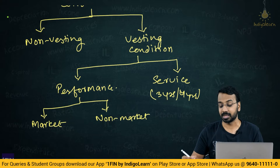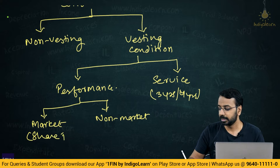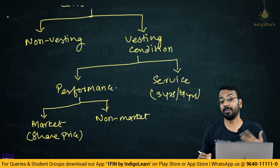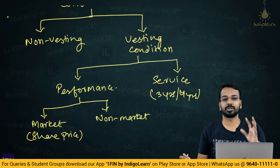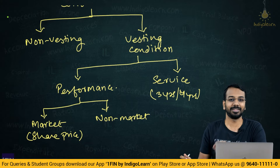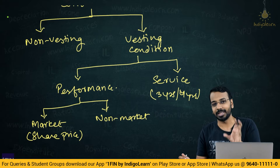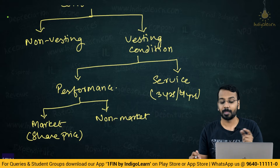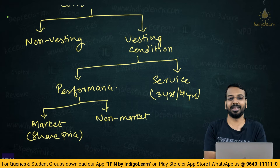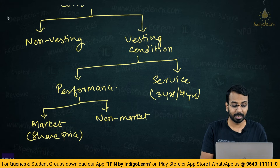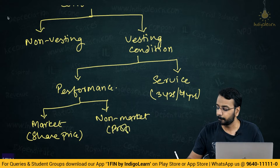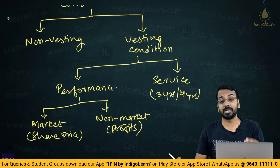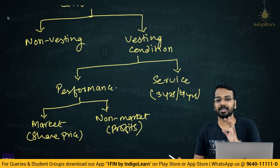A market-based condition is, for example, the share price. The company may say: if the share price touches 3000, the stock options will vest. Share price reaching 3000 is not controlled by the employees — it is based on the market, though there is an indirect relation as performance improves. Non-market-based conditions relate to things like profits — if the profit grows by 15% or 20%, those are called non-market-based conditions.